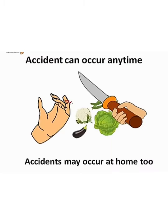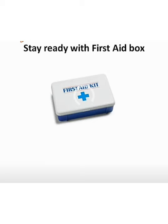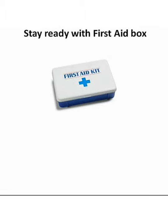You must be thinking, so where can we get this first aid? Dear students, accidents can occur anytime or at any place, so be ready with your first aid box. What is a first aid box? A first aid box is a box that holds supplies and equipment used to treat minor injuries like cuts, scrapes, burns, bruises, and sprains.